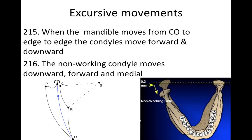The non-working condyle moves downward, forward, and medially. This is a very common question on the boards — they love to ask this type of question. Here we've got a picture, and you can see this is the non-working side. During a shift, the non-working side is going to move downward, forward, and medially.